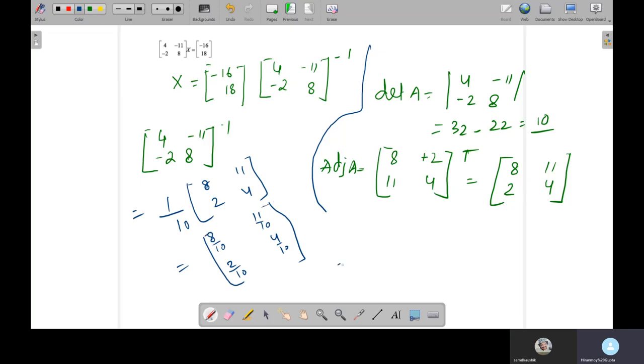So after simplification, you will get 4 over 5, 11 over 10, 1 by 5, 2 by 5. So this one you can multiply with this. How are we going to do that? We are going to take it to the next page, minus 16 and 18.